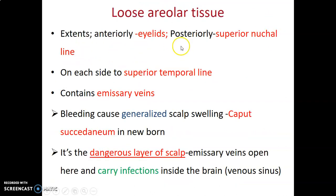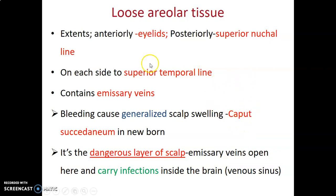The loose areolar tissue extends anteriorly from the eyelids and posteriorly to the superior nuchal line; on each side it extends up to the superior temporal line. The main contents are emissary veins. Bleeding can cause generalized scalp swelling — this is what we call caput succedaneum in a newborn, where trauma during delivery causes bleeding of the emissary veins within this loose areolar tissue.